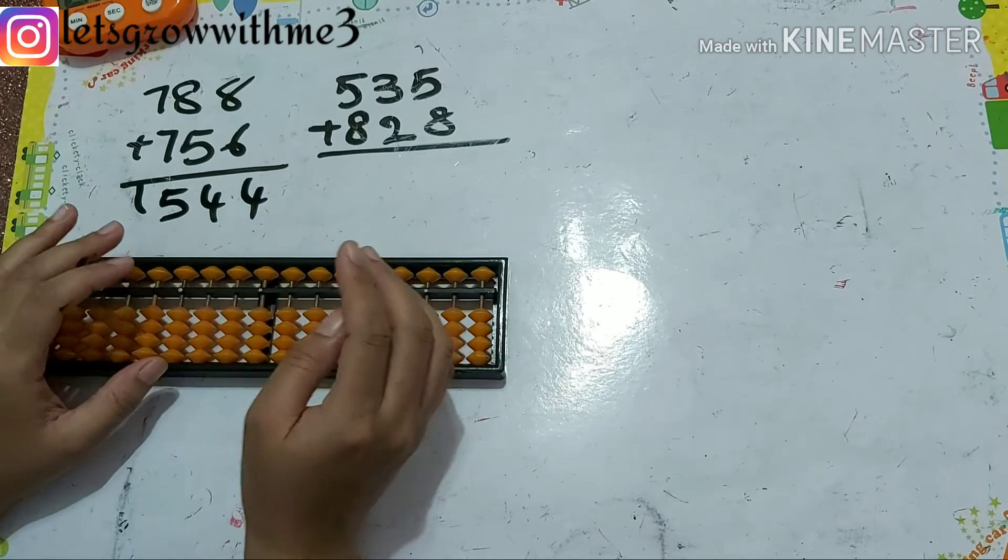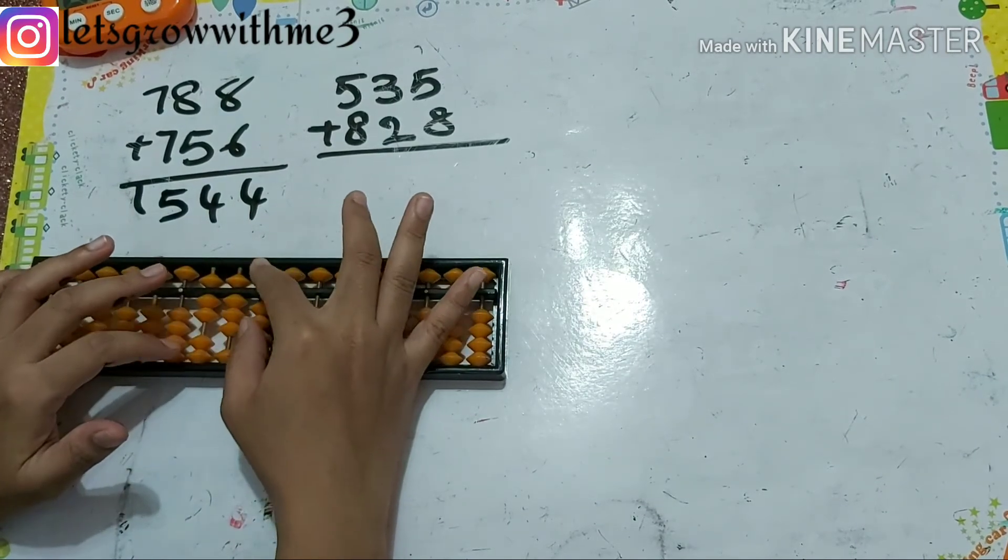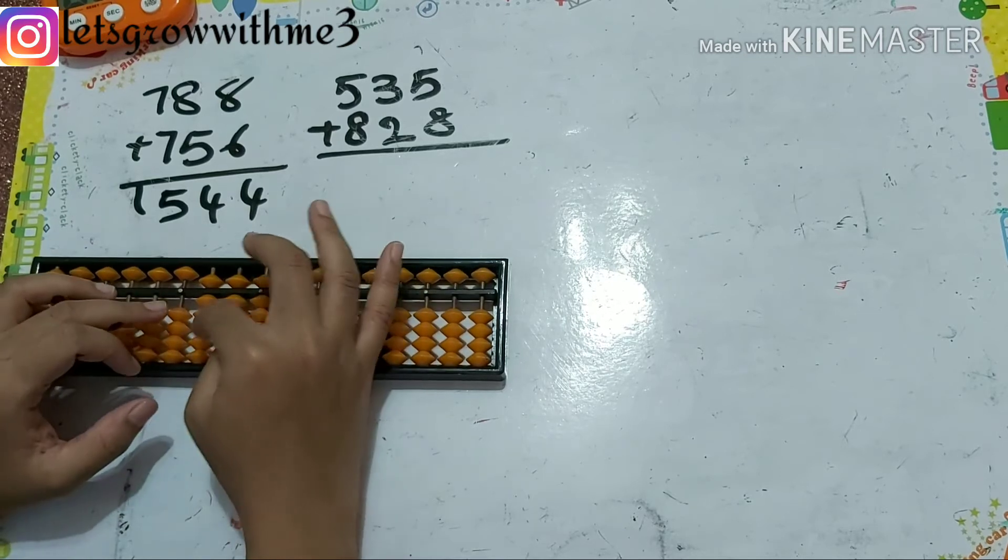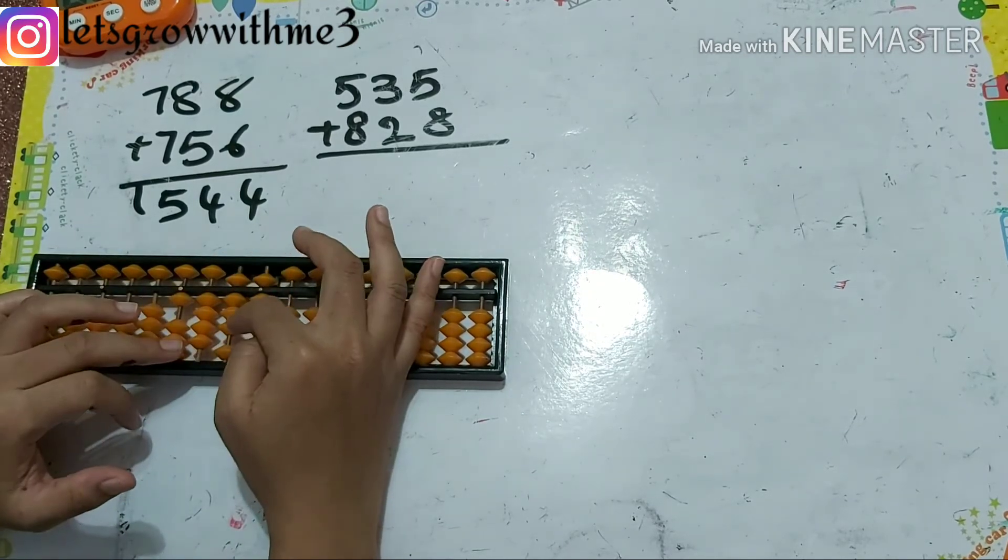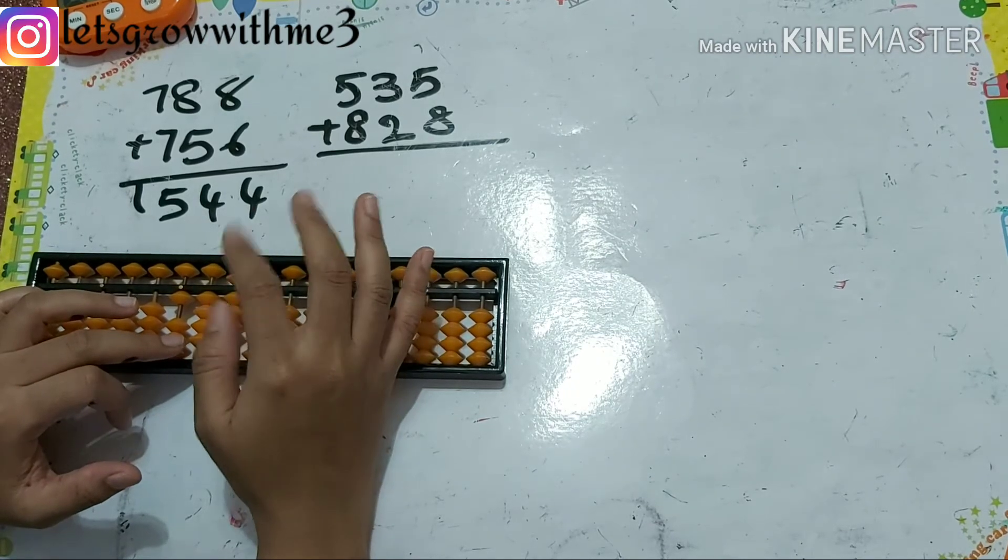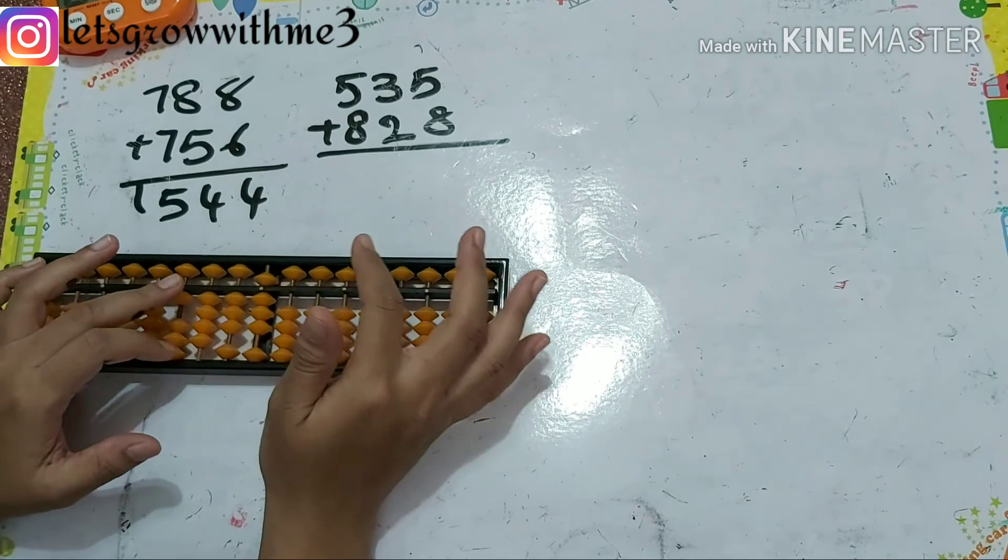Again, I'm doing the same problem. 788 plus 756. How to add 7? Papa up, mama up, babies up. Next 5 here, so I can't add directly. Plus 10 minus 5, so I'll do plus 10 later, minus 5.